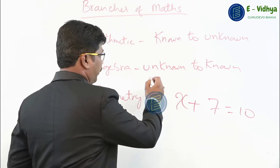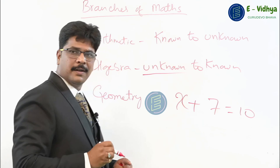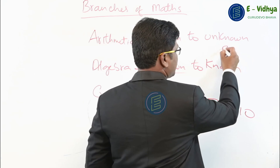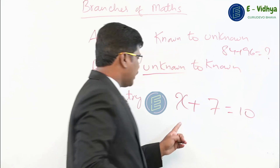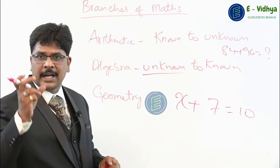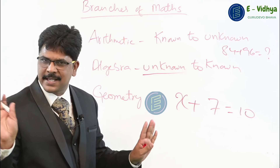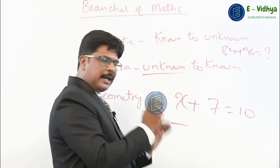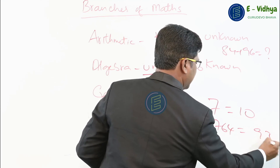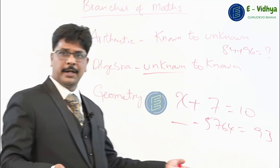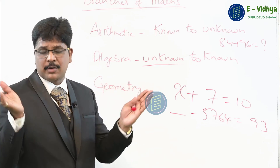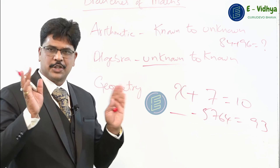In algebra we are finding the unknown numbers. In arithmetic, the question mark is at the answer side — like 84 plus 96 equals how much? But in algebra, we have: how much plus 7 equals 10 — we know the answer beforehand and solve for the unknown. Finding that unknown number is algebra. For example, there is some number, and if I subtract 5,764 from it I get 93 — what is that number? Finding that blank, that x, that unknown number, is called algebra.